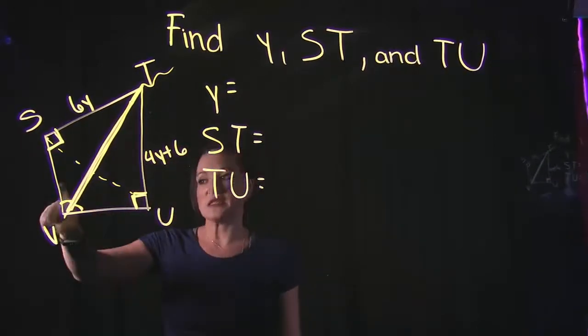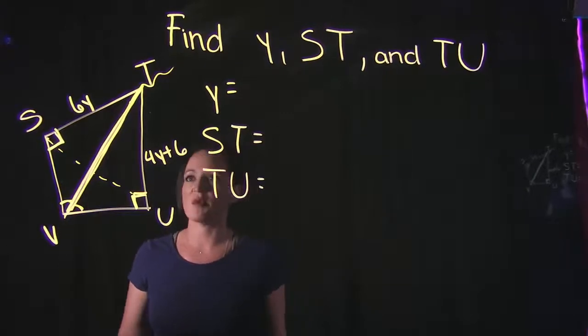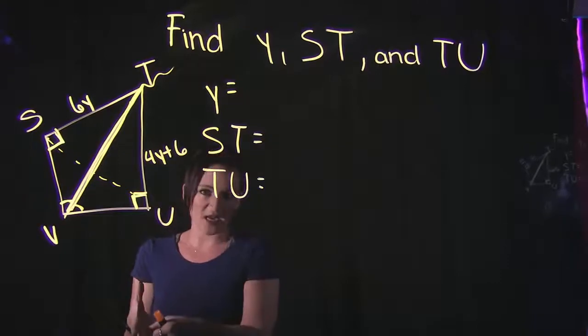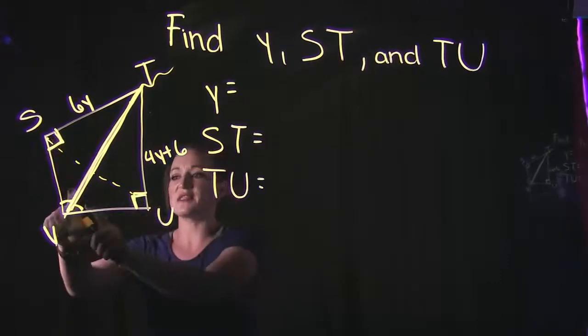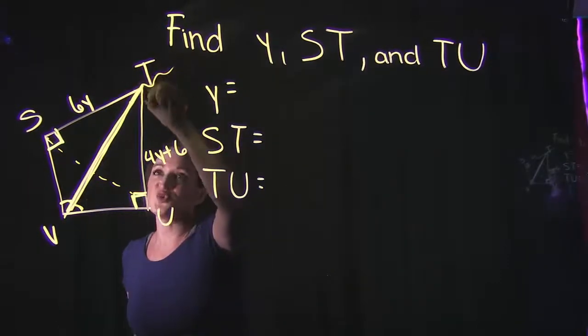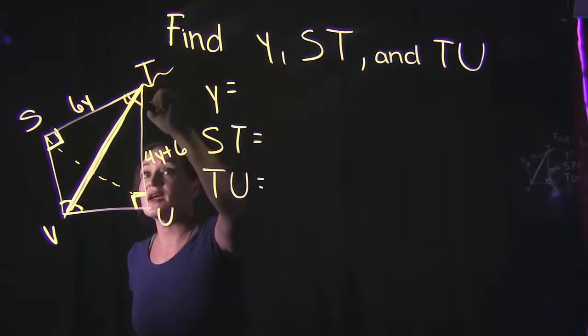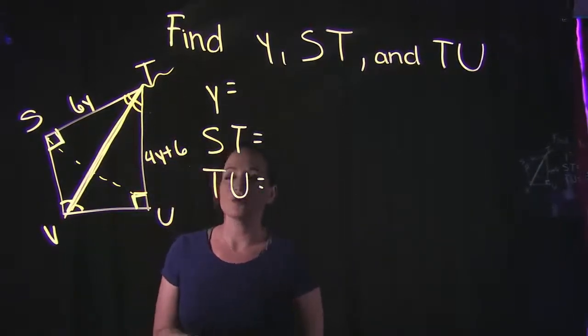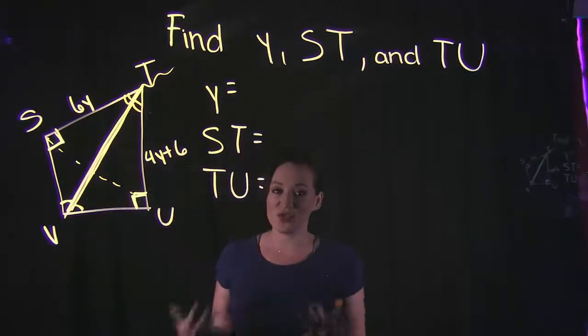So they have the same angle, they have a same side, and then we see that these marks over here signify that these two angles are the same. So they have two angles marked that are the same. So if this is the same and this is the same, we can assume that this angle up here is also going to be the same. So if all three angles are the same, they share this side over here, these are congruent triangles.